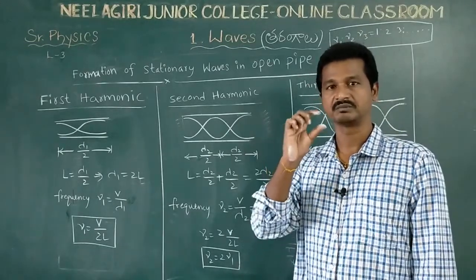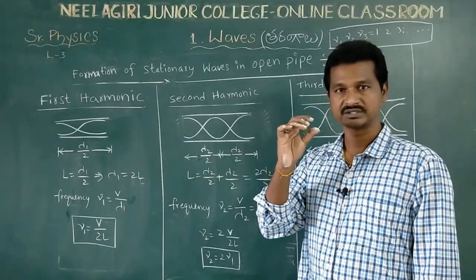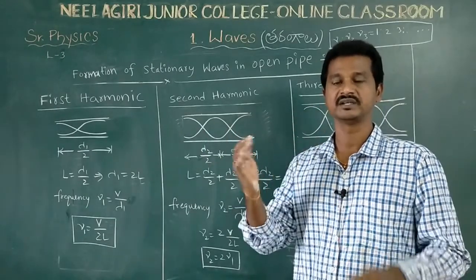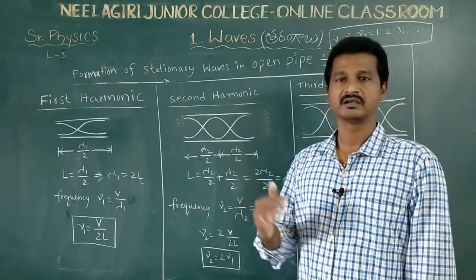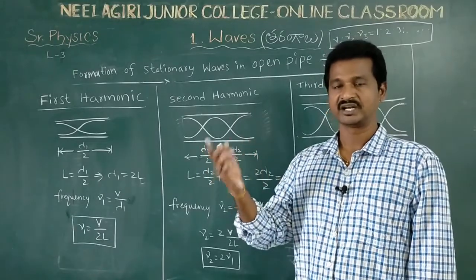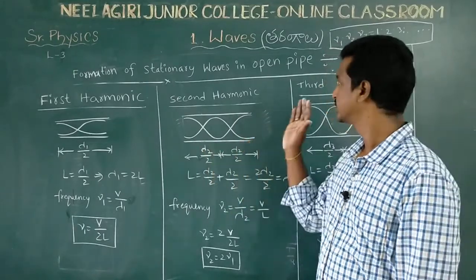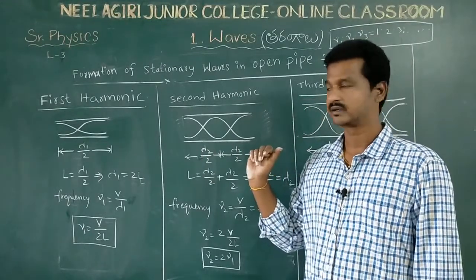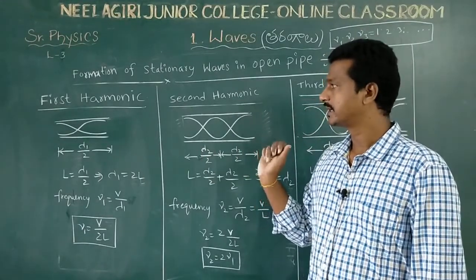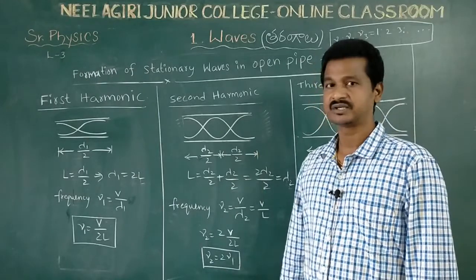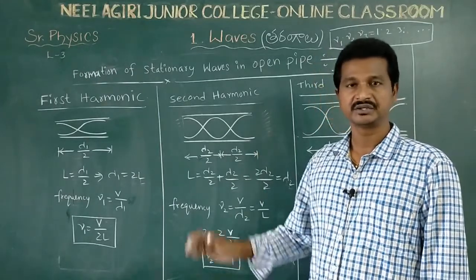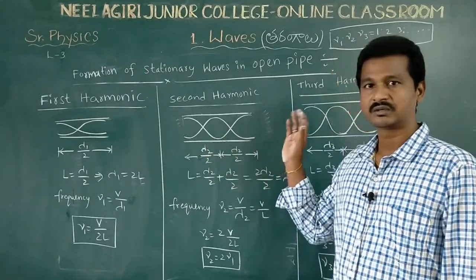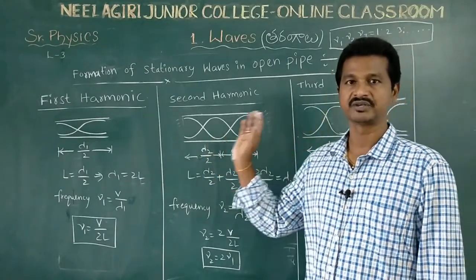An open pipe is open at both sides — both ends are open. The sound waves can be used in two sides. So, an open pipe can be used in two sides. This gives rise to harmonics: the first harmonic, second harmonic, third harmonic, fourth harmonic, and fifth harmonic.